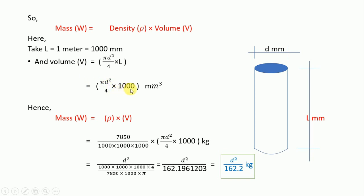Hence, mass W equals density times volume, which equals 7850 by 1000 times 1000 times 1000 times pi d squared by 4 times 1000 kg. Simplifying this calculation, we get d squared over...